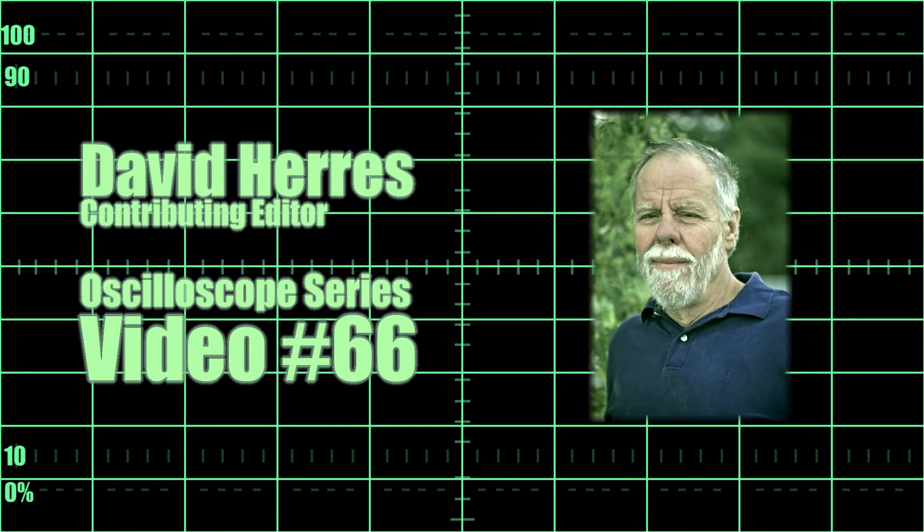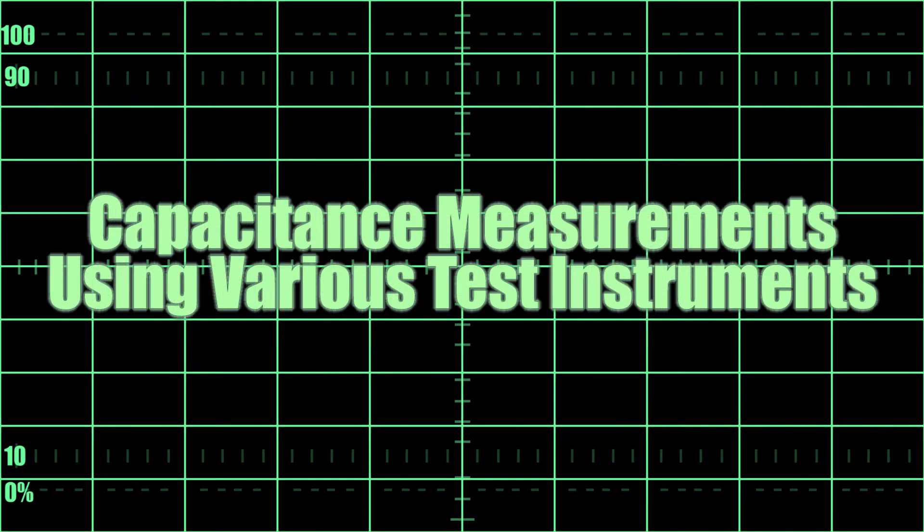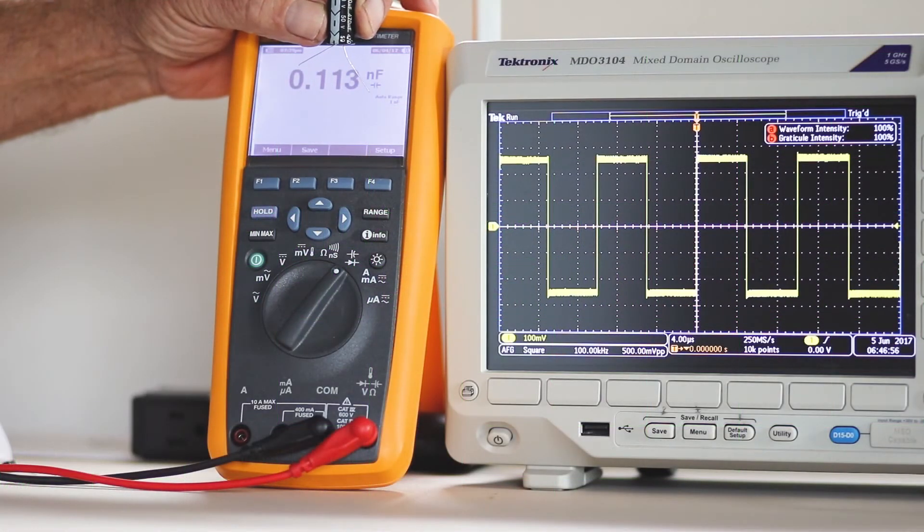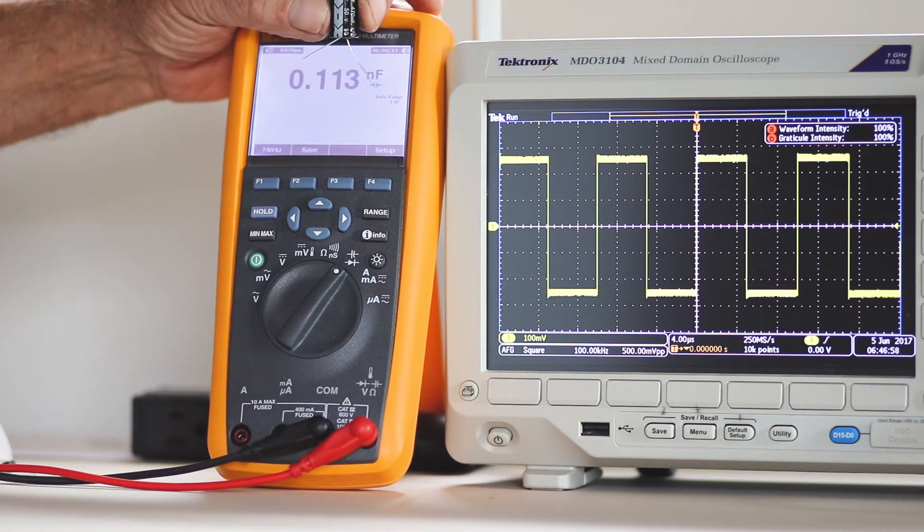Hi, and welcome to our 66th test and measurement video. Ordinarily, capacitors are provided with capacitance and working volts, printed or color-coded on the component.